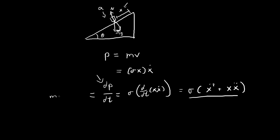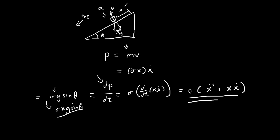So essentially we have mg sinθ as the net force, taking the downward direction as positive. And since m = σx, this becomes σxg sinθ. Differentiating the left-hand side using the product rule gives σ(ẋ² + xẍ). If you notice, you can cancel the sigmas, and you end up with a nice differential equation.